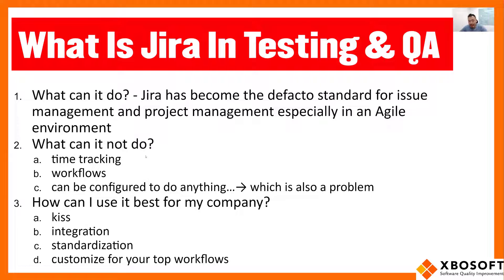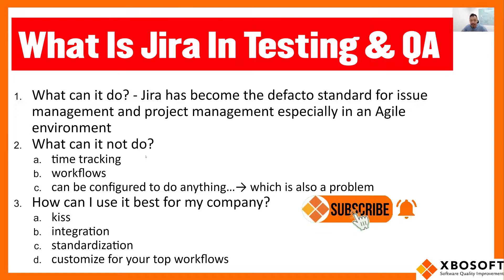What ends up happening is a lot of companies get Jira and possibly use the out-of-the-box configuration. We've worked with many companies, and we go in and see how they're using Jira — because it can do everything, they have it doing just about everything, and it's often not standardized. What we recommend is to really use the KISS approach: find a couple of workflows, apply Jira in an agile fashion, examine the workflows you've configured, and see how you can improve them in the next iteration.